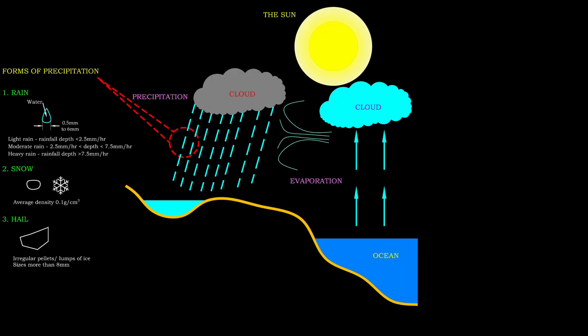Rainfall is defined as precipitation in the form of water drops, with size ranging from 0.5 mm to 6 mm. It can be further classified based on intensity.